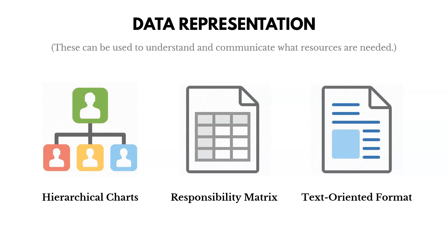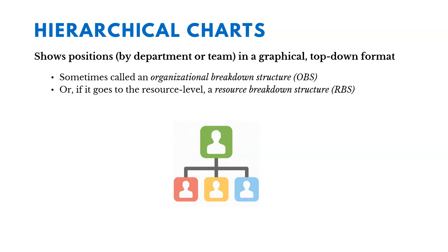Hierarchical charts show positions in a graphical top-down format, arranged according to an organization's departments, units, or teams. This is sometimes called an OBS or RBS. An OBS is an organizational breakdown structure, going down to a department or team level. An RBS is a resource breakdown structure that goes down to an individual resource level.